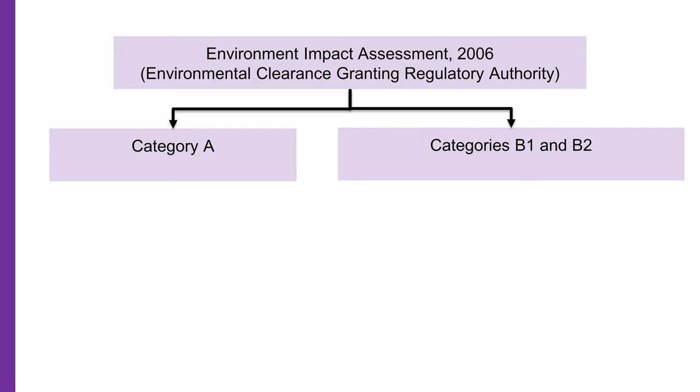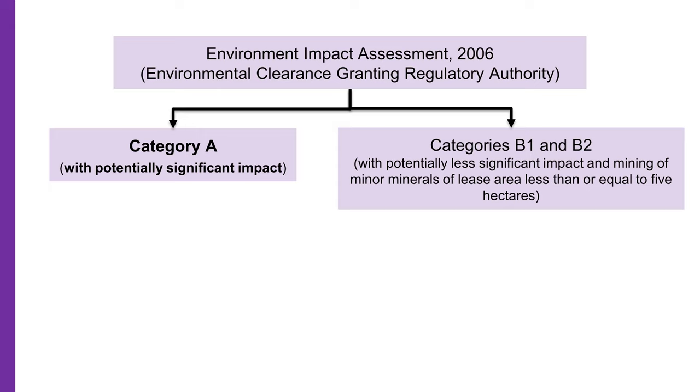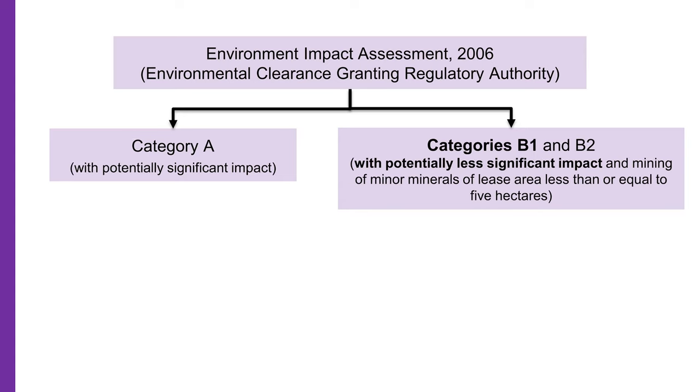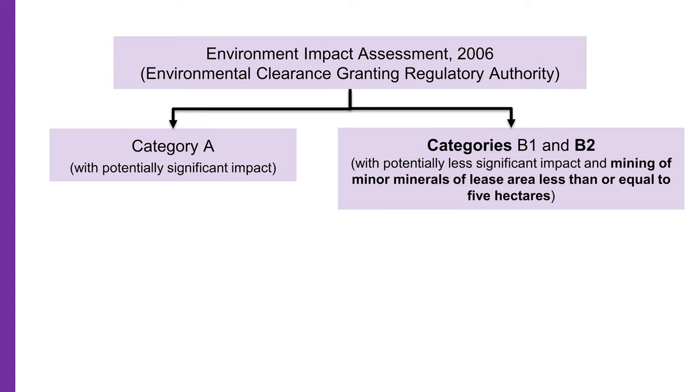There are three categories of projects in EIA as described in this chart. Category A projects are those with potentially significant impact. Category B1 projects are those with potentially less significant impact. Category B2 projects are those for mining of minor minerals in less than or equal to 5 hectares of land. The authorities involved are different for each category. The process under EIA involves a number of authorities who act as checks and balances on each other.